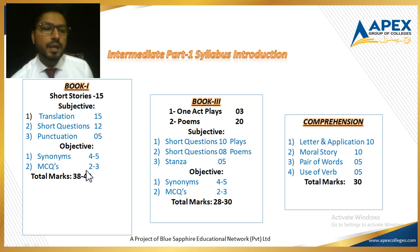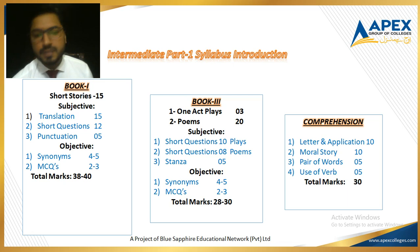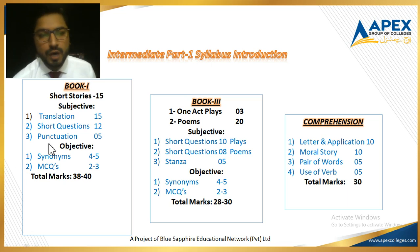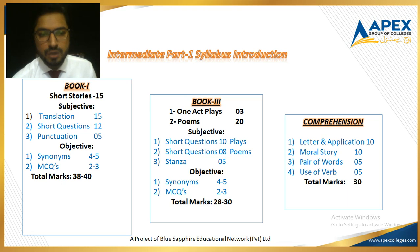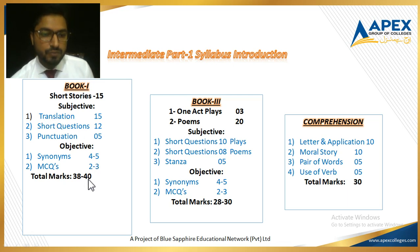Let's talk about Book 1 first. In your paper, there will be questions of 38 to 40 marks — it's uncertain whether the paper setter will select 38 or 40. Book 1 comprises almost 15 lessons; these are all short stories, almost 14 short stories and one speech — lesson number 11, a speech by Dr. Martin Luther King Jr. Traditionally, your paper consists of two parts: subjective and objective. From Book 1, the subjective will be almost 40 marks, and the first question taken from Book 1 is of 15 marks.